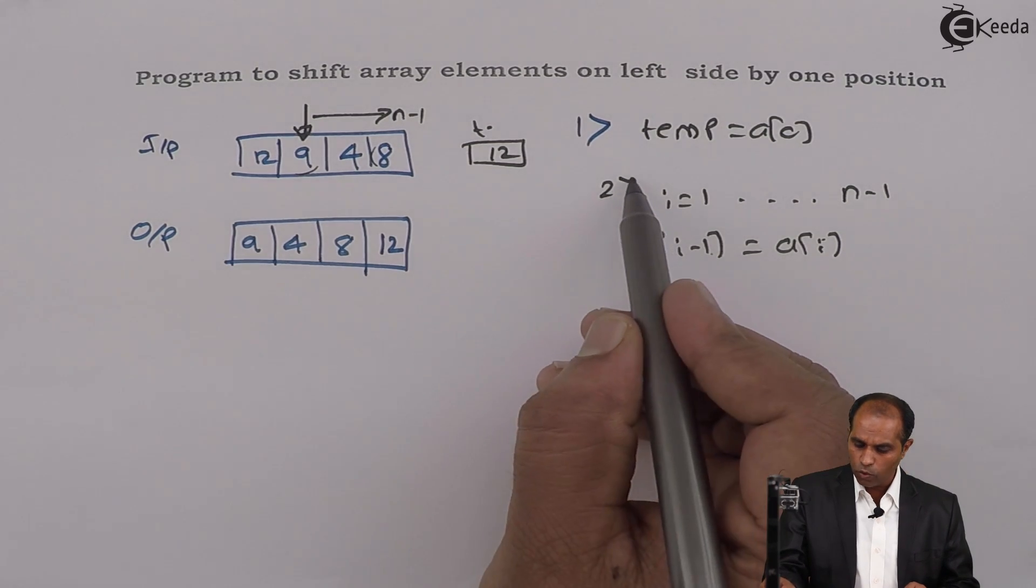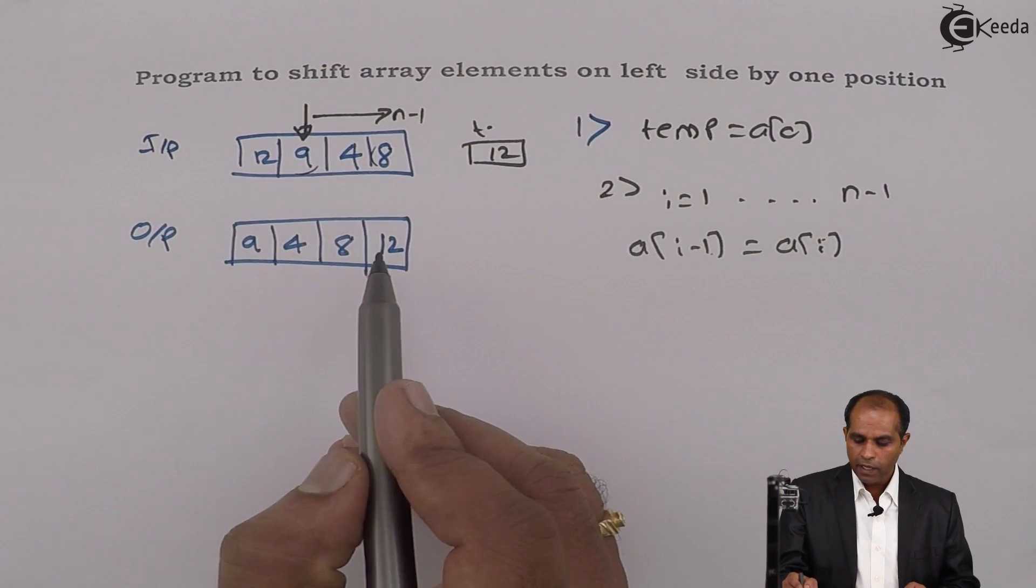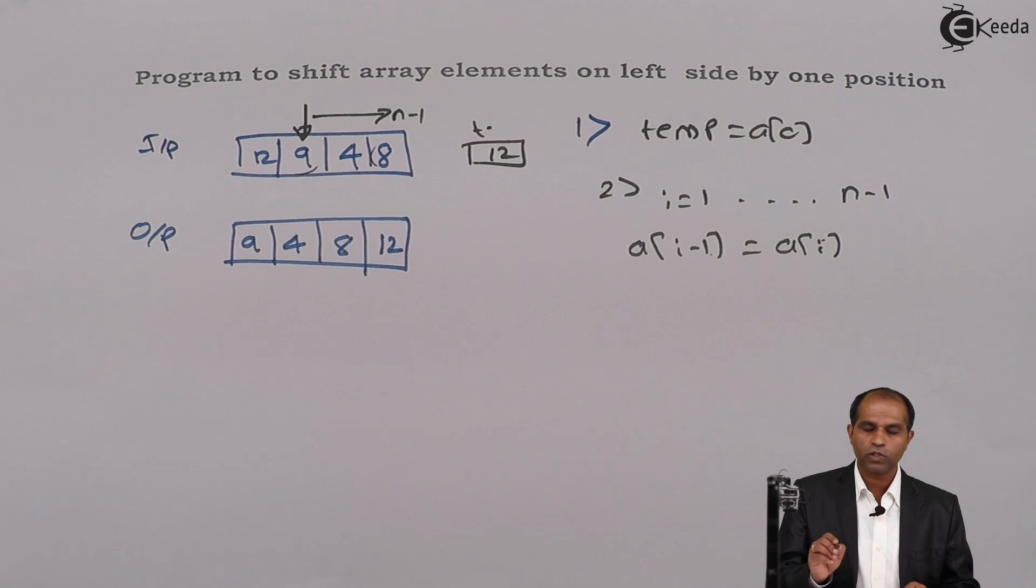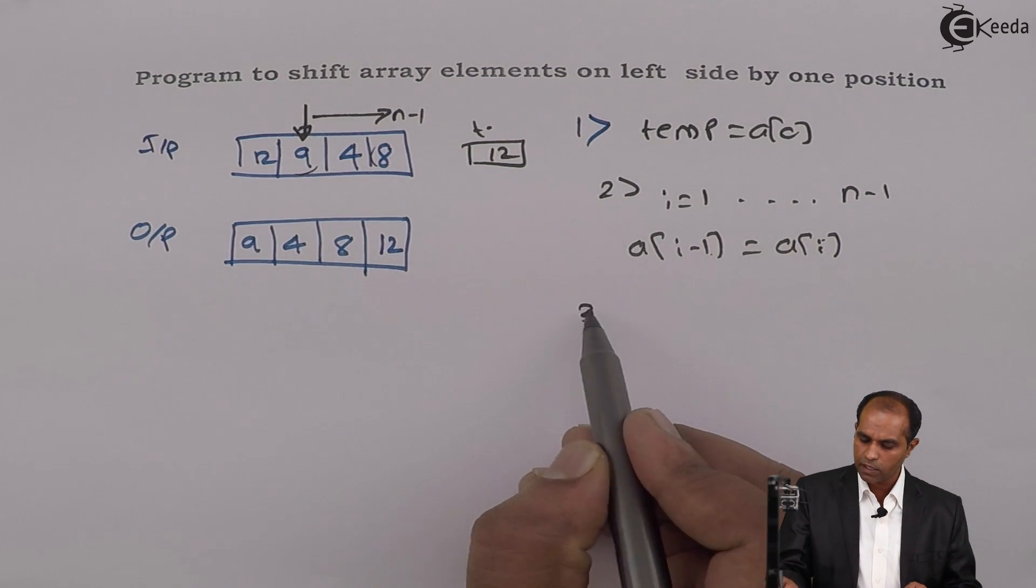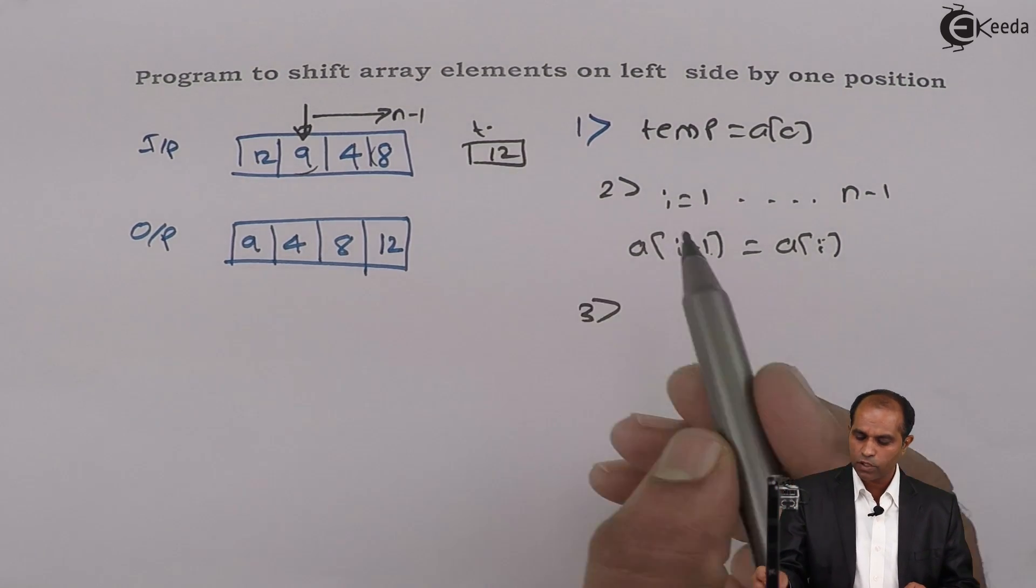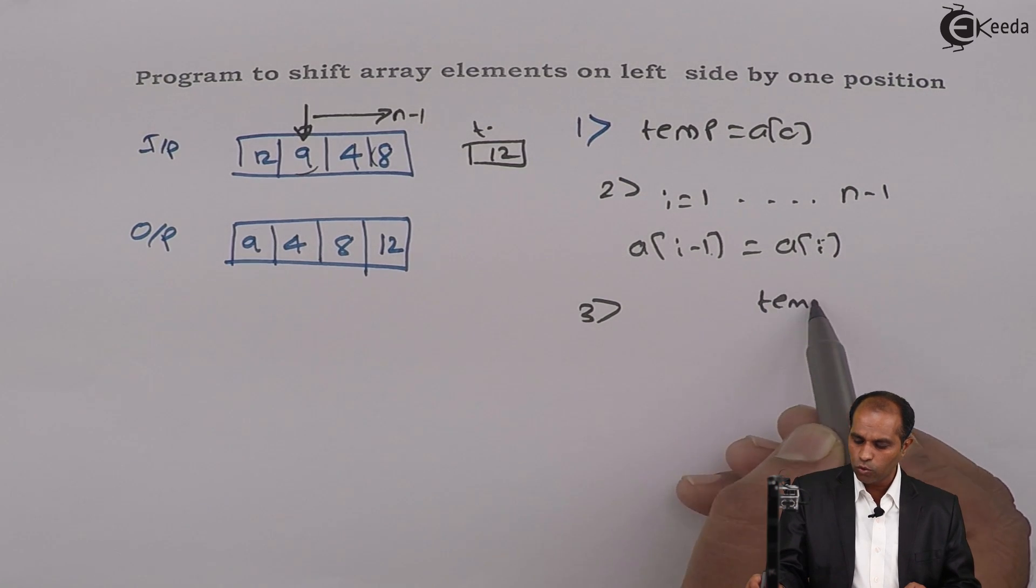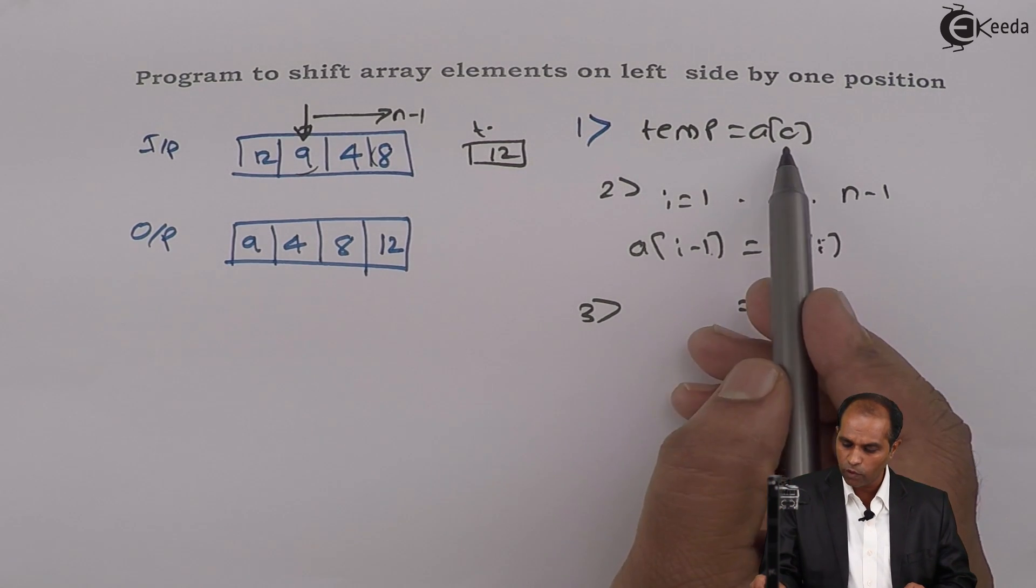At the end of step number 2, I will have all the elements shifted except the last two. The last two both are 8 itself. And the third step is to suffix this particular temp to the last location.